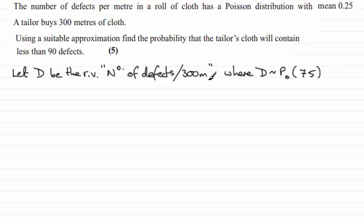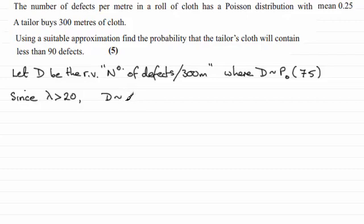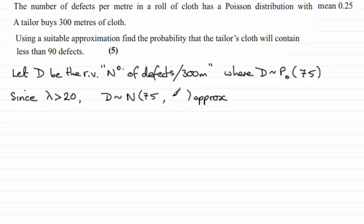I'm assuming you're fairly familiar with approximating a Poisson distribution to a normal distribution, because that's what this is all about. Just as a reminder: if the mean — lambda — is greater than 20, then we can approximate this distribution to a normal distribution. So we can say that D is distributed approximately as a normal distribution. A normal distribution has two parameters — the mean and the variance — and for a Poisson distribution they are the same, in this case both 75. So D ~ N(75, 75) approximately.